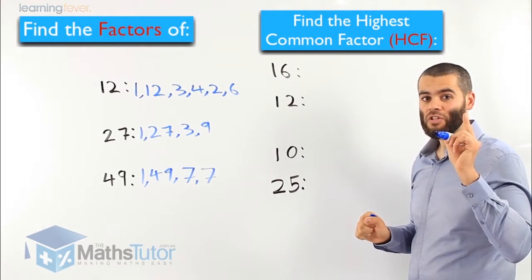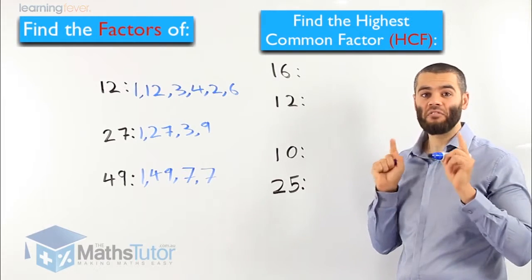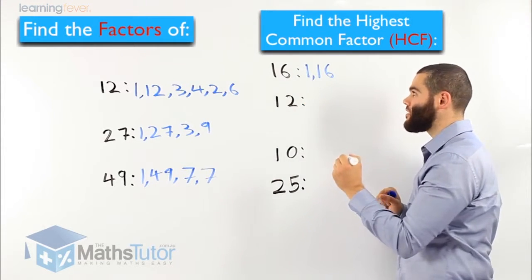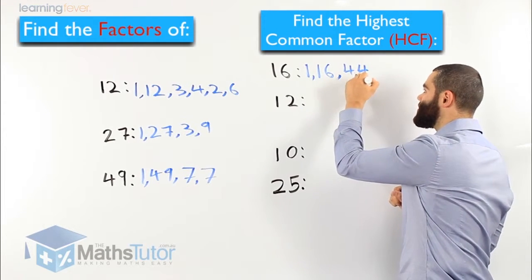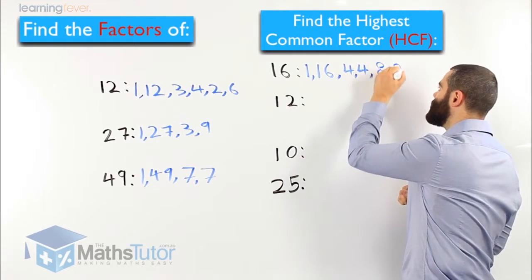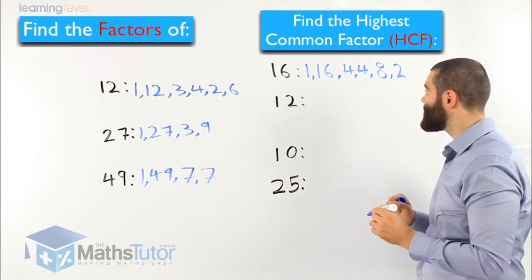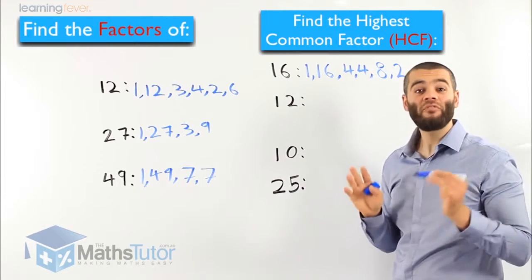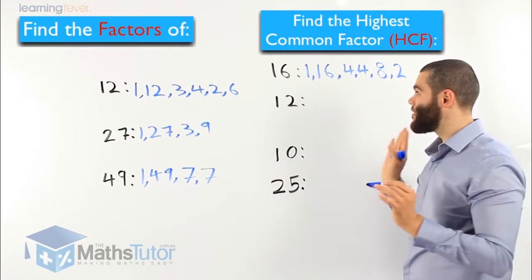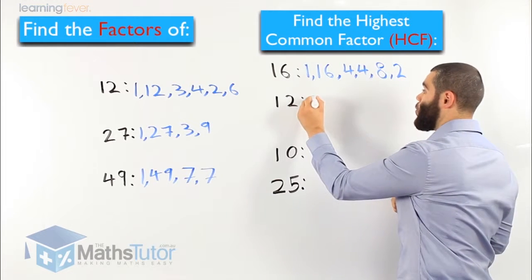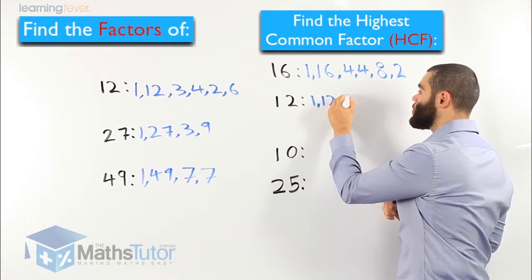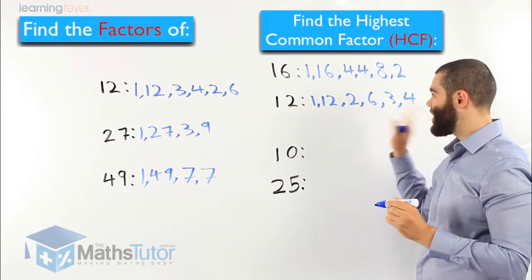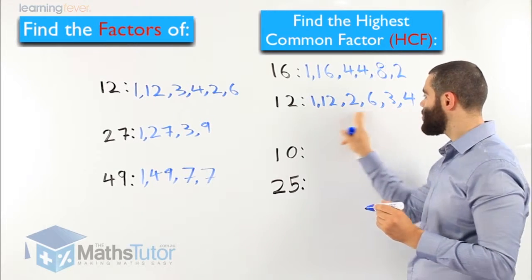First, we need to switch our times tables on and work out the factors of 16. We know 1 times 16 is 16, 4 times 4 is 16, and 8 times 2 is also 16. Now we find the factors of 12: 1 times 12 is 12, 2 times 6 is 12, and 3 times 4 is also 12. So the factors of 12 are 1 and 12, 2 and 6, and 3 and 4.